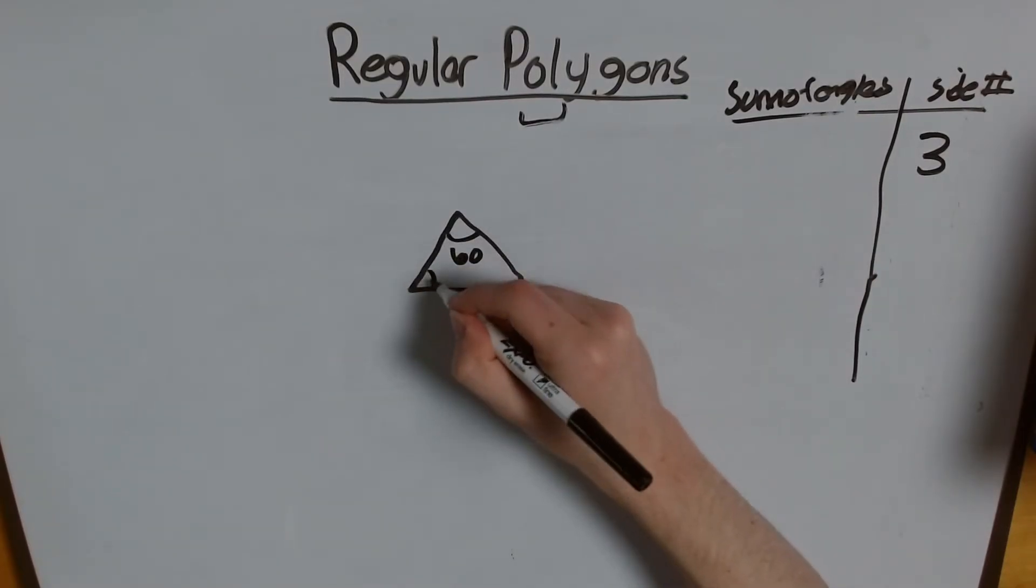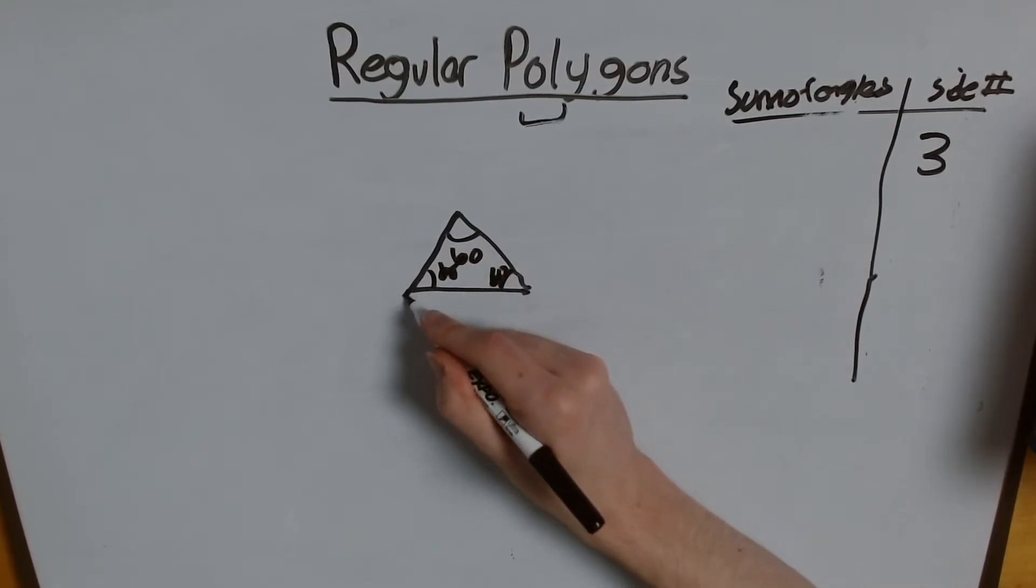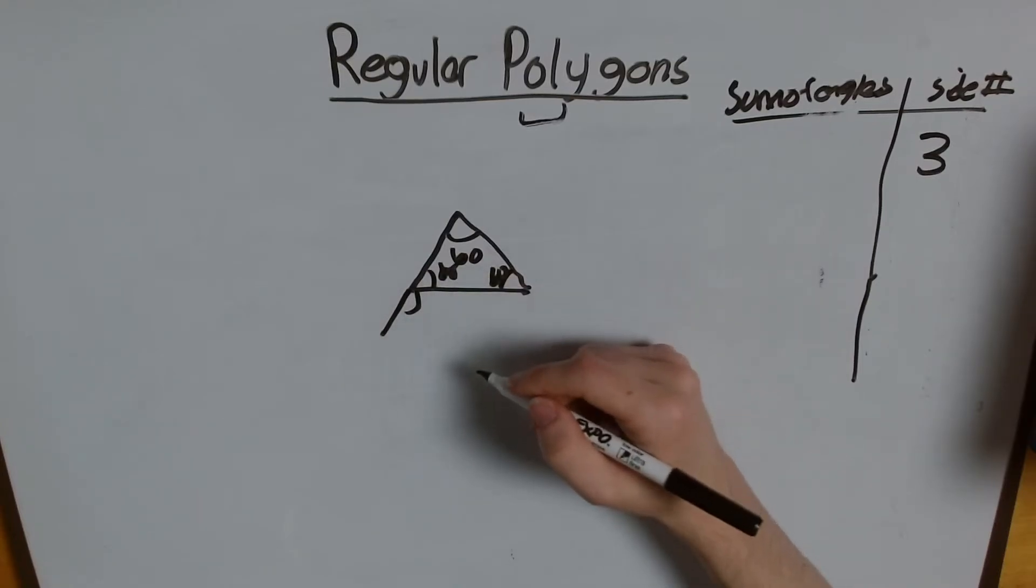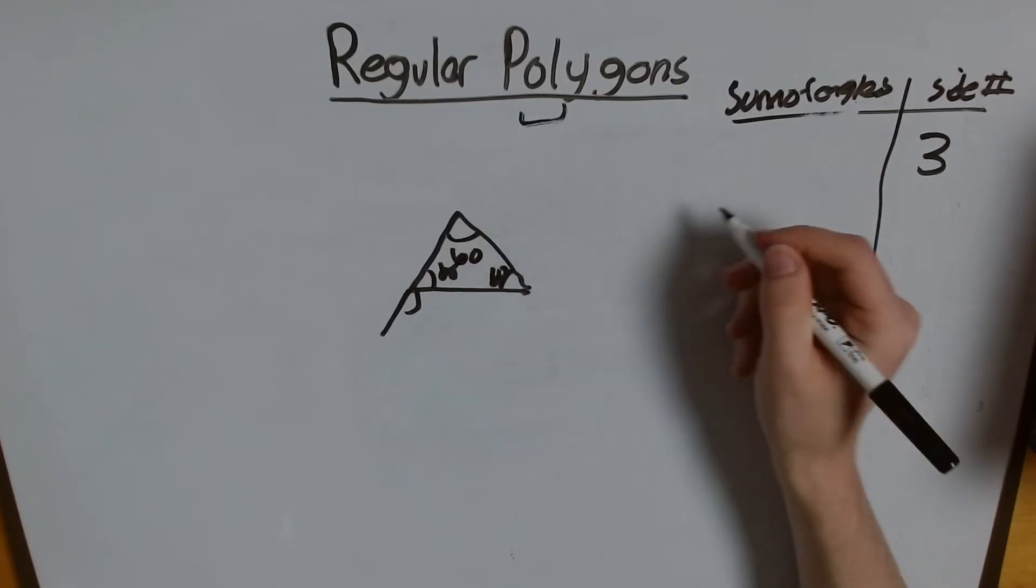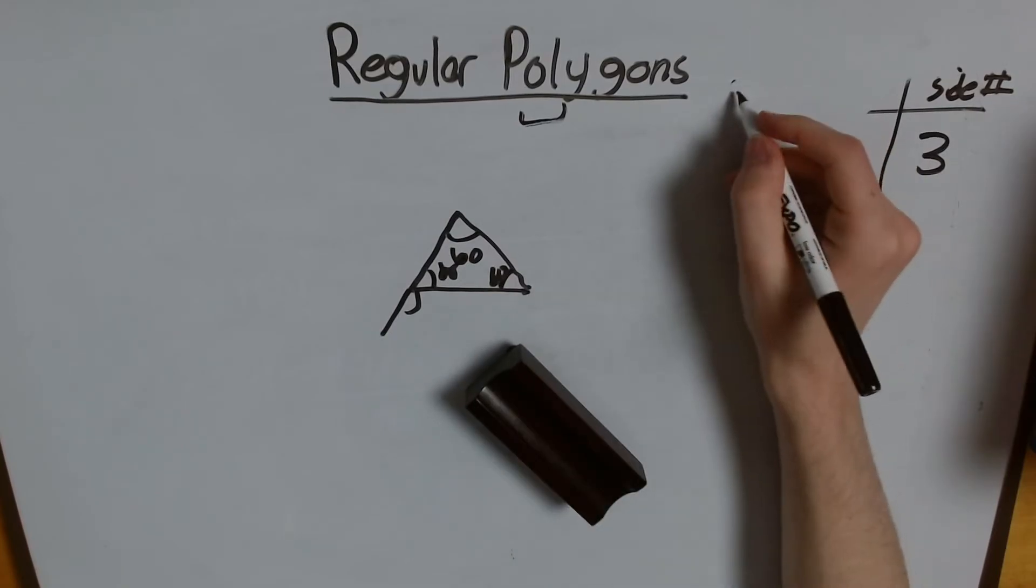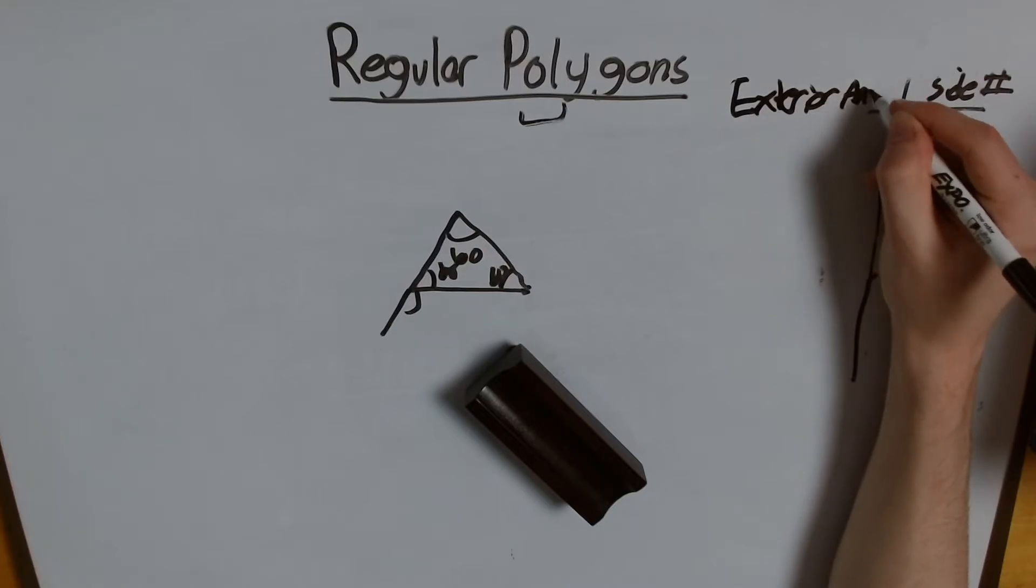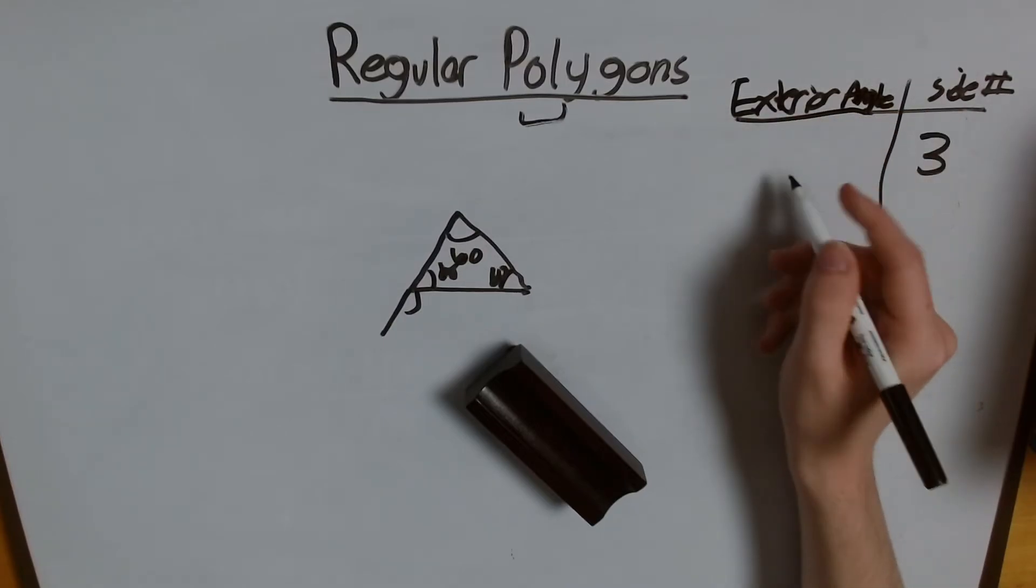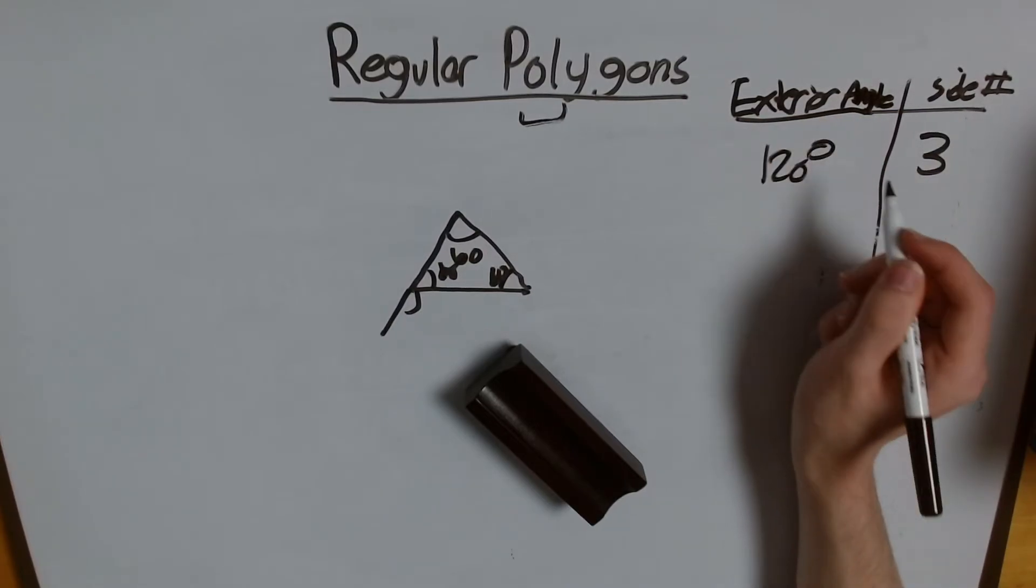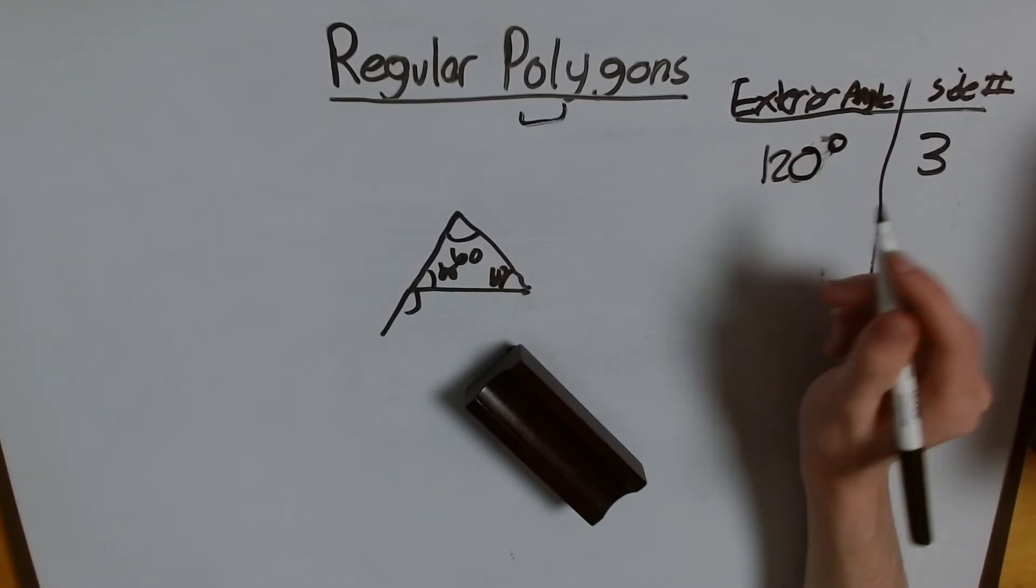So, each of these angles has to be 180 divided by the number of sides, or 60. So, this has to be 60, this has to be 60, this has to be 60. So, an exterior angle for any one of those sides has to be 180 minus 60, or 120. So, this is going to be 120 degrees, 120 degrees for three sides.